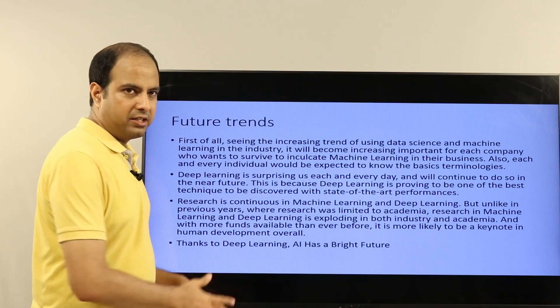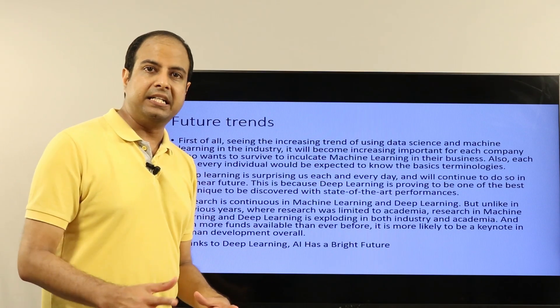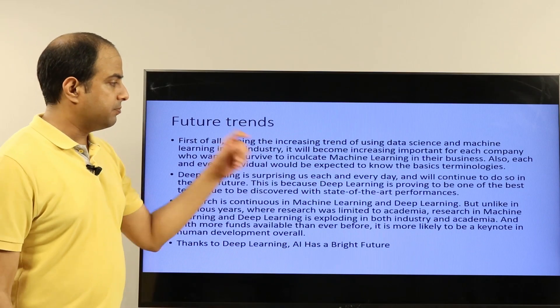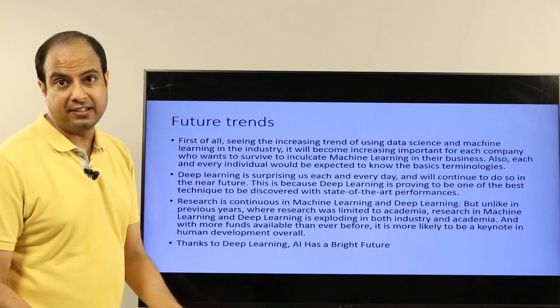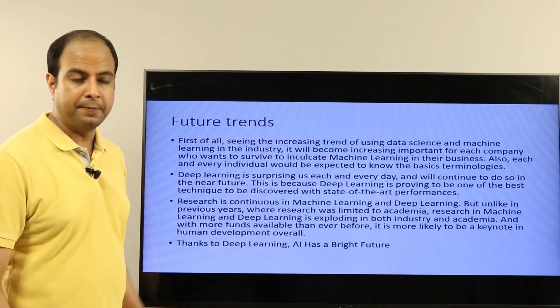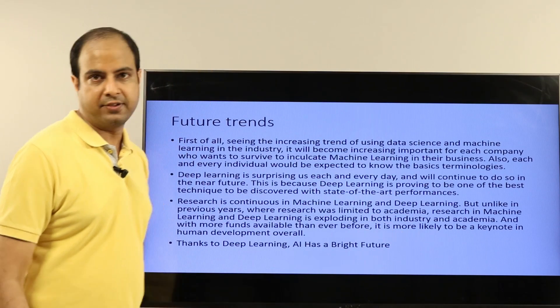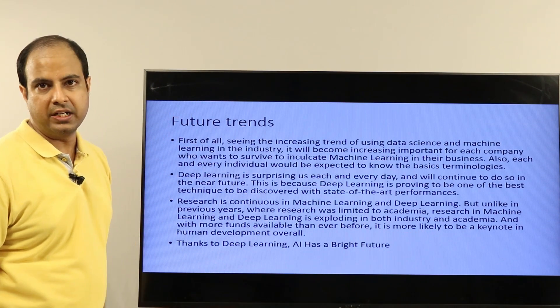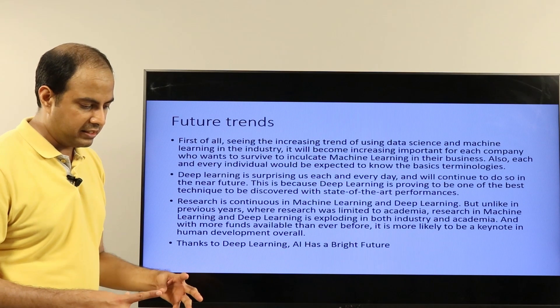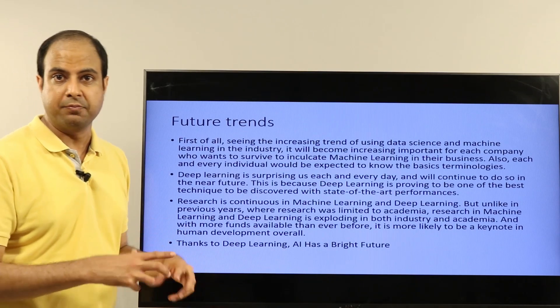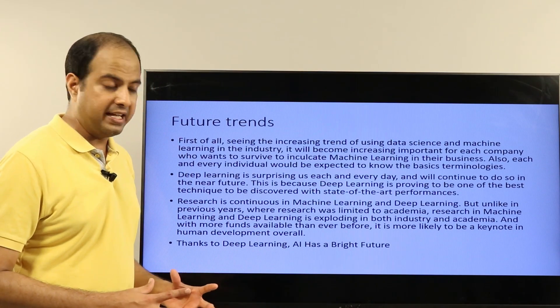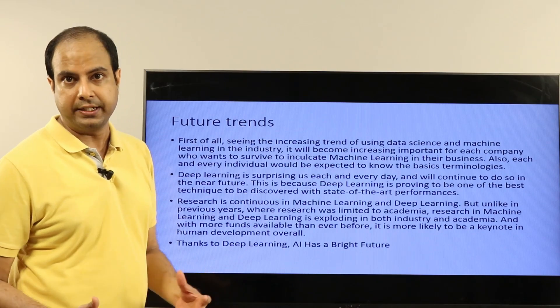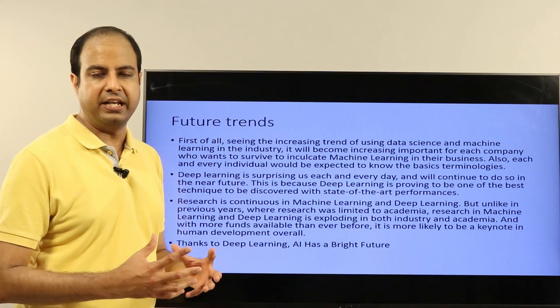For any of the cognitively complex tasks, especially in vision and speech, deep learning is proving to be super useful. Even in text-based tasks it has been seen to be super useful. Research continues in machine learning and deep learning, but unlike in previous years where research was limited to academia, research in machine learning and deep learning is being explored and is exploding in both industry as well as academia. And with more funds available than ever before, it is more likely to be a key thing in human development. Essentially, traditional machine learning is getting replaced more and more over time. And thanks to deep learning, in fact AI has a bright future. People believe that thanks to deep learning, many of these tasks which were earlier impossible to be done automatically can now be automated. So thinking of comparison between machine learning and deep learning, deep learning surely has a very bright future.